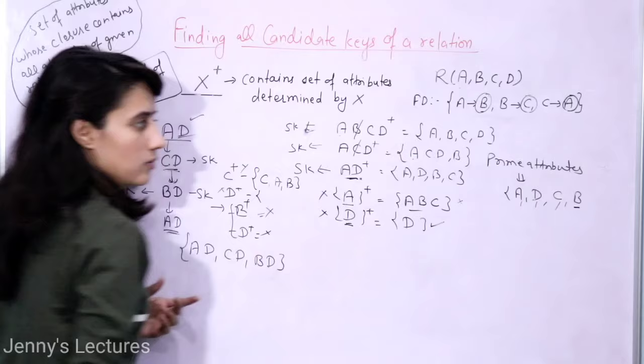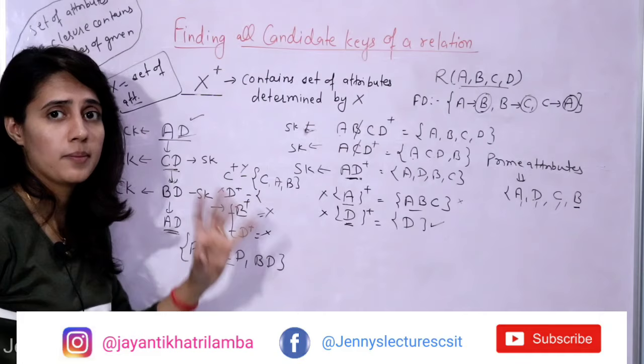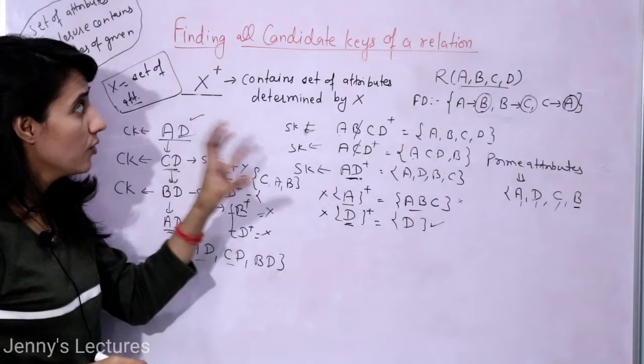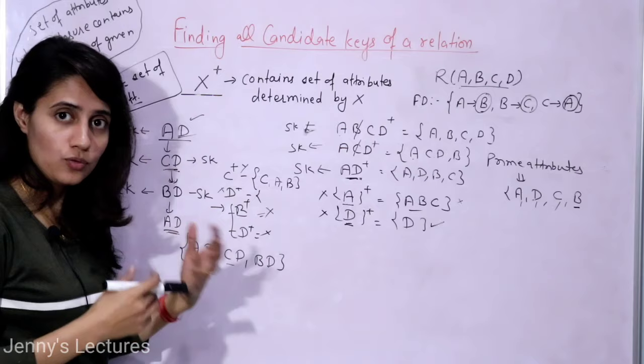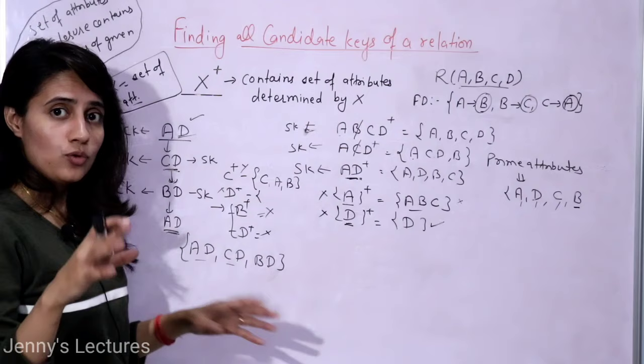All four attributes A, B, C, D are prime attributes in this relation — there is no non-prime attribute. This is how you can find out all available candidate keys in a given relation. If you practice five to fifteen questions, you'll be able to find all candidate keys within seconds.